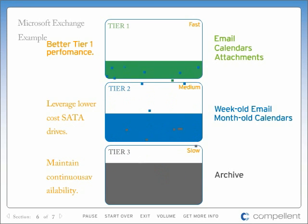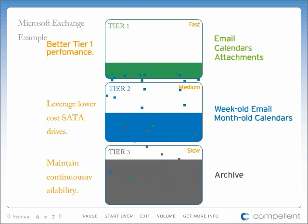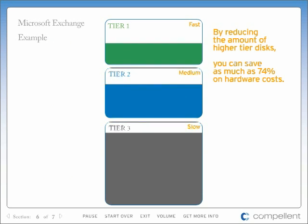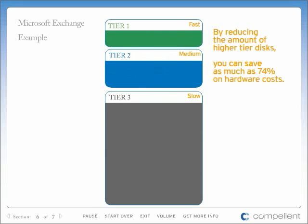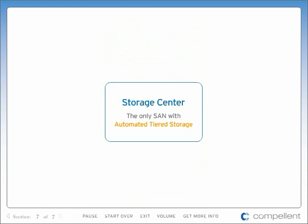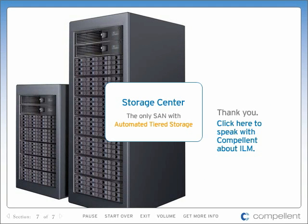The only ones who notice the change are the ones paying attention to the bottom line. By automatically progressing data to the most cost-effective tier, you are able to purchase fewer fiber channel drives and leverage more lower-cost drives. For many companies, the result is as much as a 74% drop in hardware costs alone, and by eliminating manual data classification and movement, data progression cuts storage administration time in half. Storage Center allows you to achieve the benefits of ILM without the traditional costs or complexities. If you think your company is ready to implement a low-maintenance and cost-effective ILM strategy, contact Compellent today to find out more about Storage Center, the only SAN with automated tiered storage.